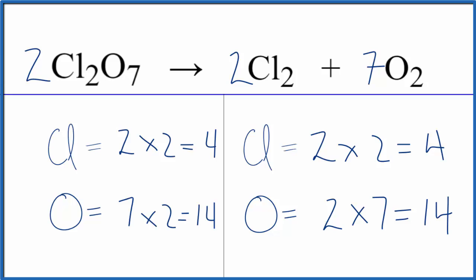If you were to write the states, this dichlorine heptoxide, that's a colorless liquid. And then we know that the chlorine gas, and then we get oxygen gas.